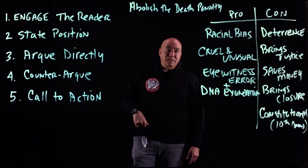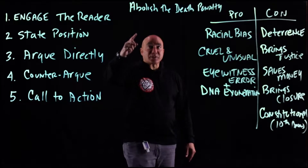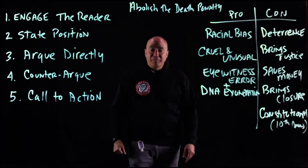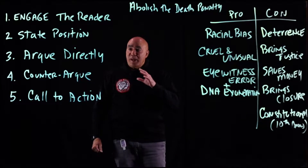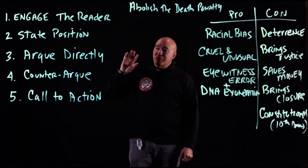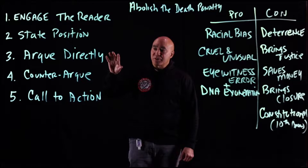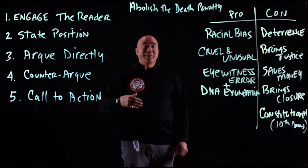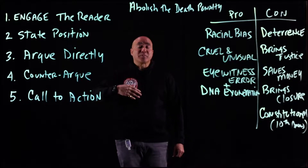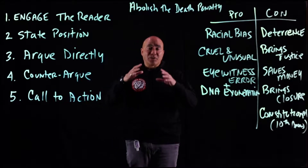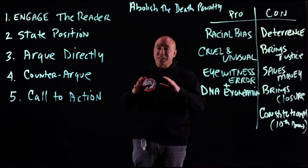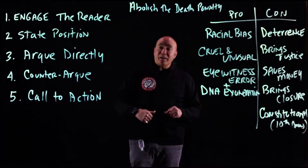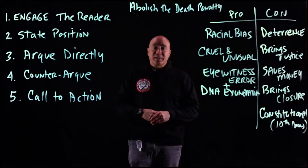The topic we're going to address is abolish the death penalty. This pattern has five distinct parts. You're familiar with the five-paragraph essay — introduction, three bodies of support, and conclusion. That also has five sections, but this pattern is not that. This is a higher-level pattern. It still helps you organize.